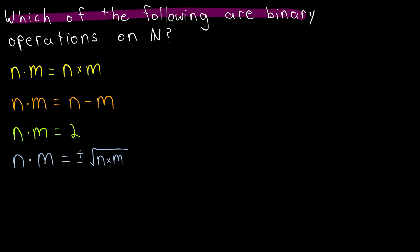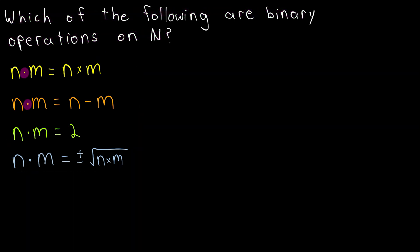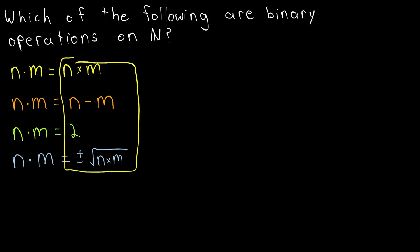Which of the following are binary operations on the set of natural numbers? Here we've got four prompts. Note that the dot between the N's and M's just represents a generic operation, and on the right we specify what the operation actually is in each case.